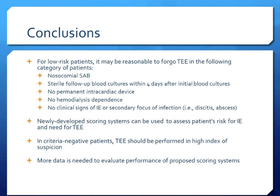For low-risk patients, it may be reasonable to forego TEE when all of the following criteria are met: nosocomial staph aureus bacteremia, sterile follow-up blood cultures within four days of initial cultures, no permanent intracardiac device, no hemodialysis dependency, and no clinical signs of infective endocarditis or secondary foci of infection. Newly developed scoring systems can help assess a patient's risk for IE and need for TEE. In criteria-negative patients, TEE should still be performed if there is a high index of suspicion. More data is needed to evaluate the performance of proposed scoring systems.